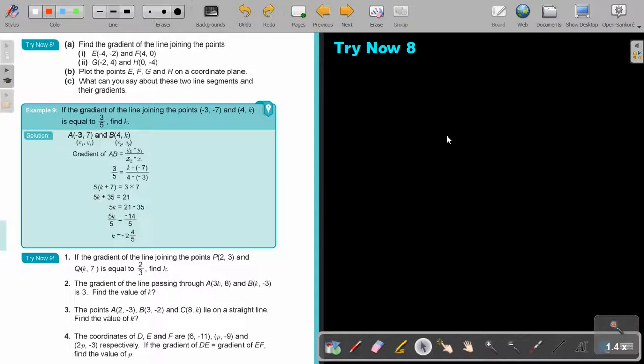Find the gradients of the line joining the points. So I'm starting. This is my first one. This is E, negative 4 and negative 2. This is F, 4 and 0. If I number it, this is x1, y1. This is x2, y2.